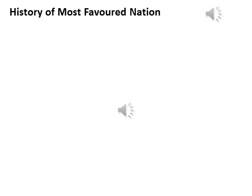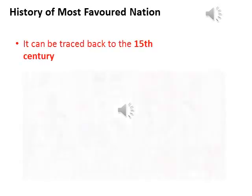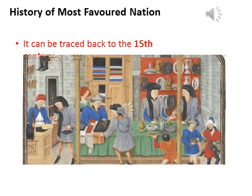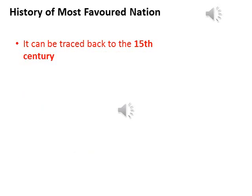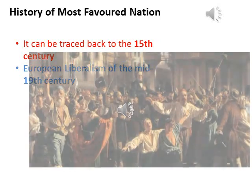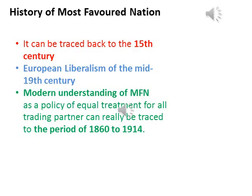The first part describes the history of MFN. Whilst the origins of the modern MFN clause can be traced back to the 15th century, it is perhaps most useful for the present purposes to consider the role of the MFN clause in the golden age of European economic liberalism of the mid-19th century. Modern understandings of MFN treatment as a policy of equal treatment for all trading partners can really be traced to the period of 1860–1914.